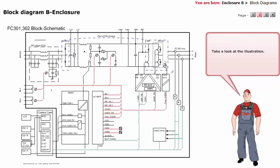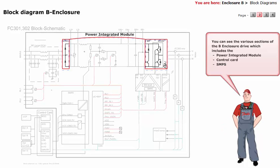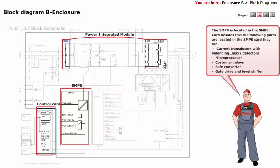Take a look at the illustration. You can see the various sections of the B enclosure drive, which includes the power-integrated module, control card, and SMPS. The SMPS is located in the SMPS card.